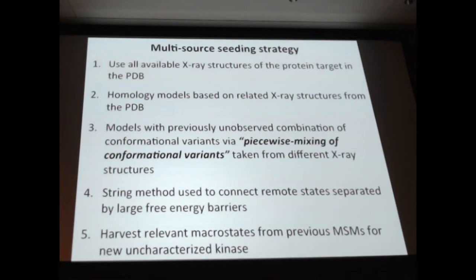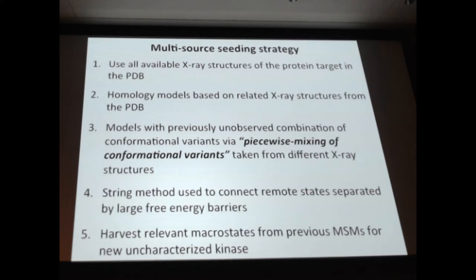This is our philosophy, and so we created this kind of protocol at different points to build the starting conditions for these models. We say we're going to use all available crystal structures, and then also build homology models based on other crystal structures that don't look like the ones we have. Here you could use other kinases to put your Abl kinase in different states not available for Abl. You could also make models that are not observed in any shape or form, but just do a piecewise mixing of conformational variants - like you could have a P-loop that's kinked with a DFG-out and an alpha-C that's in, and maybe there's no crystal structure like that, but maybe it's a feasible state.